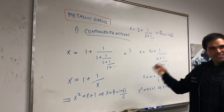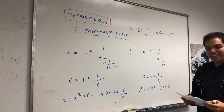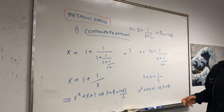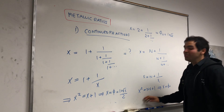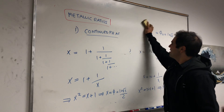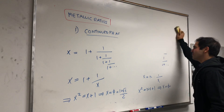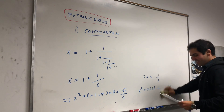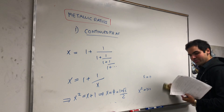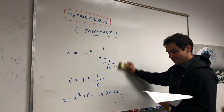So the metallic ratios appear in continued fractions. Here's another neat idea — they also appear in geometry, and that may be where they originally appeared.